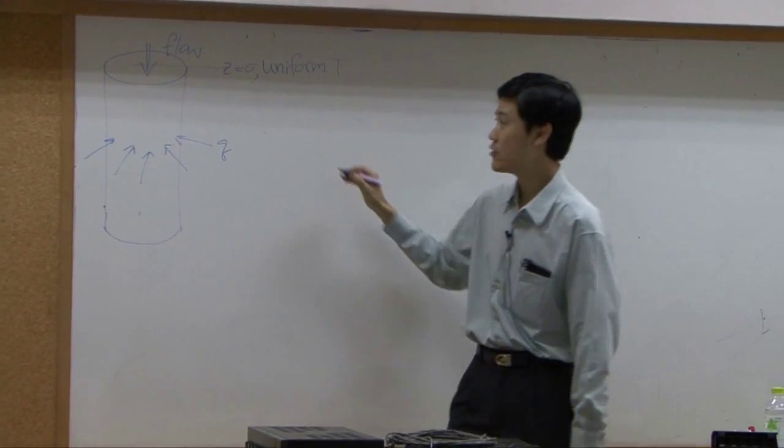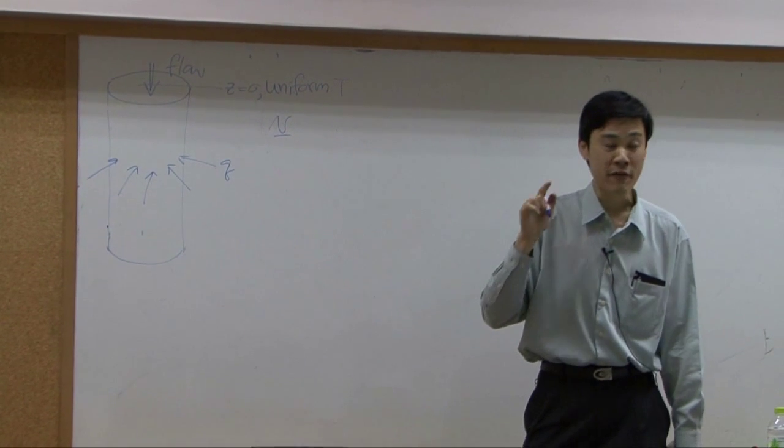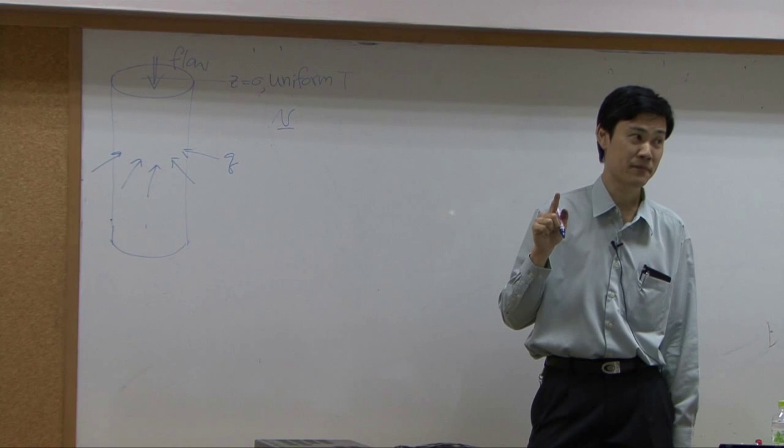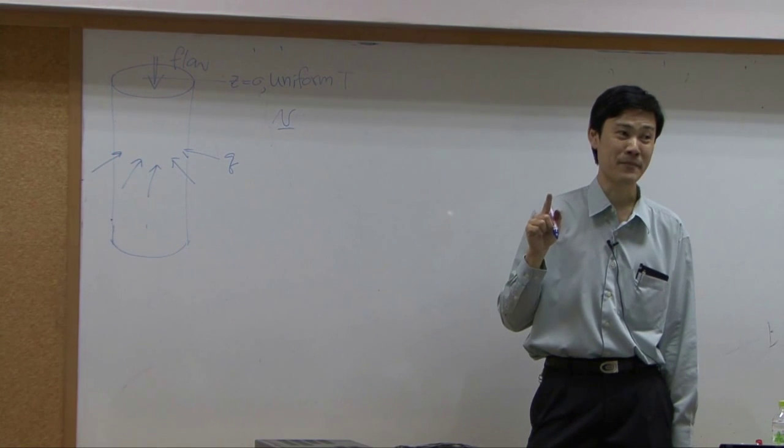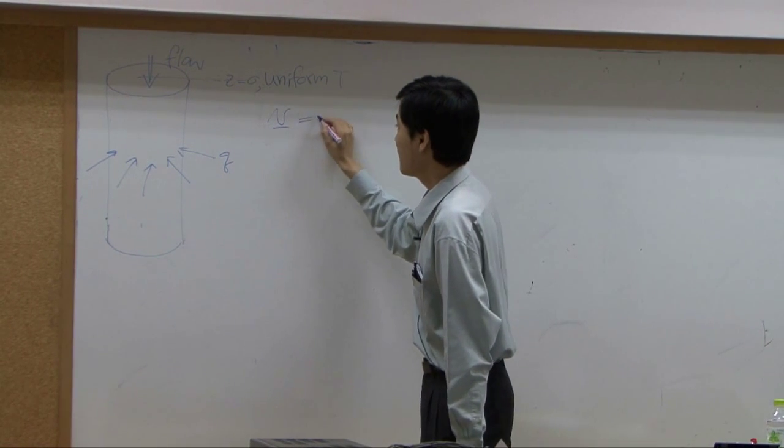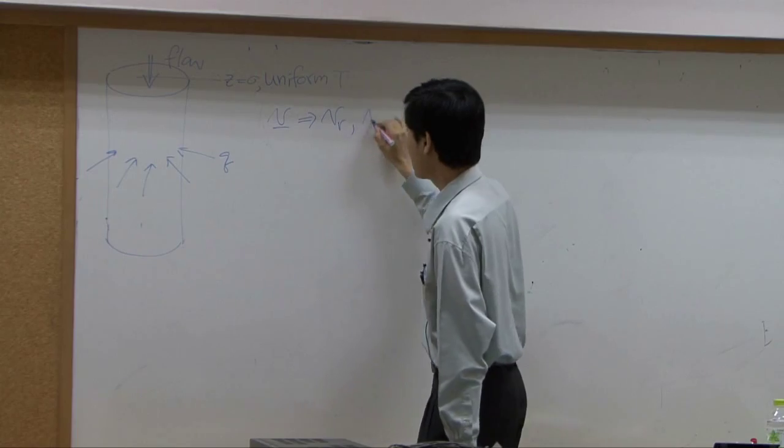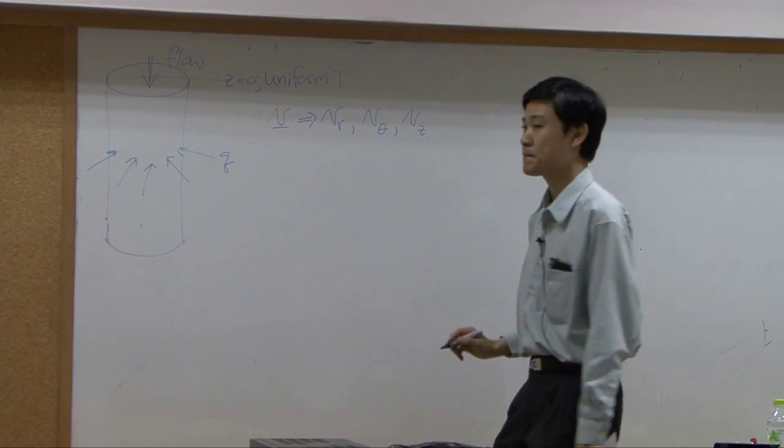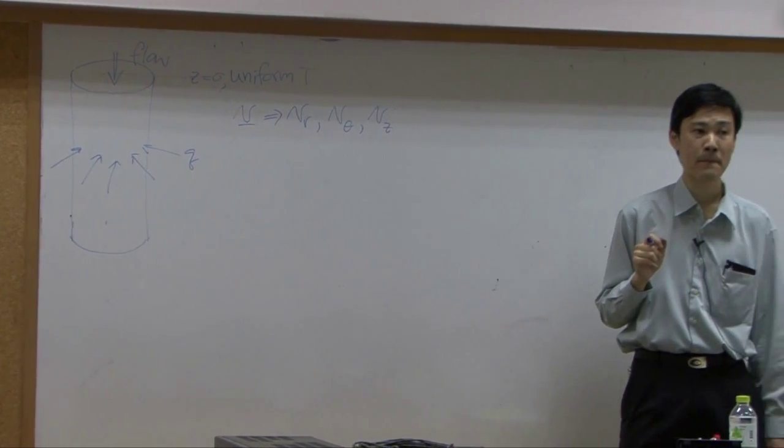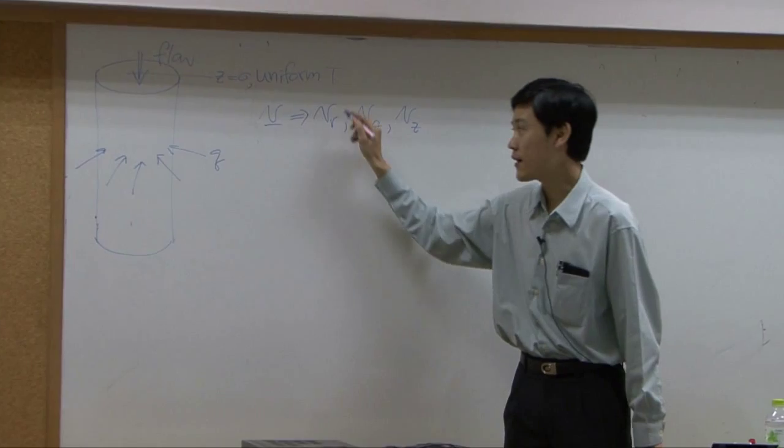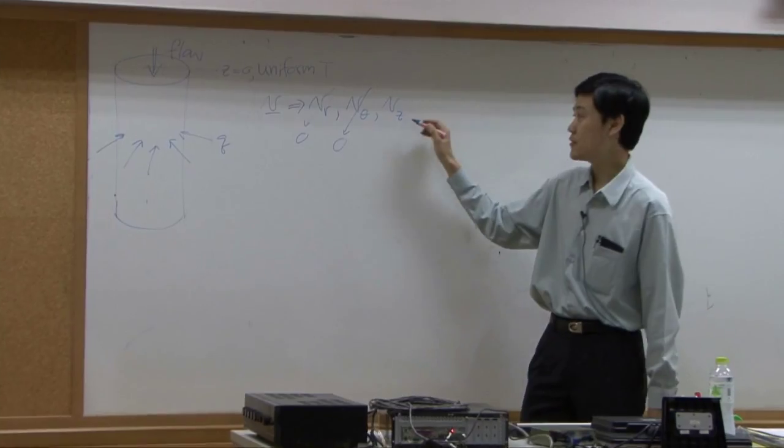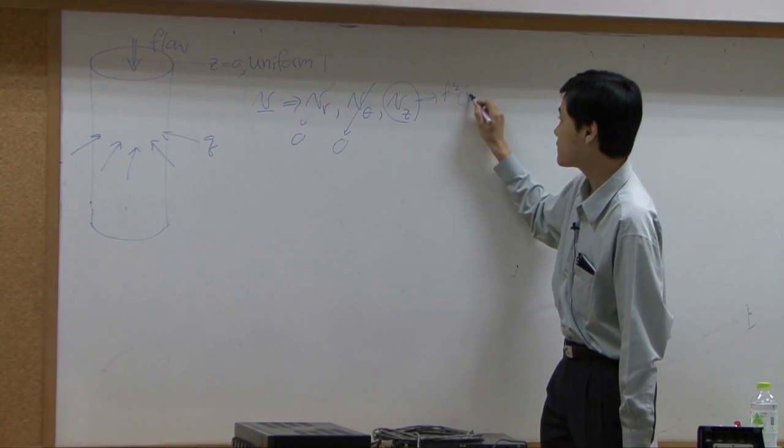Regarding momentum transport, you have velocity profile and you have three components of velocity. What kind of coordinate should we use? Cylindrical, right? So cylindrical coordinate, you have VR, Vθ, Vz. Which one is zero? VR is zero, Vθ is zero, Vz is not. So Vz itself is function of R.